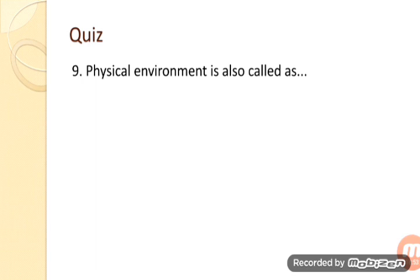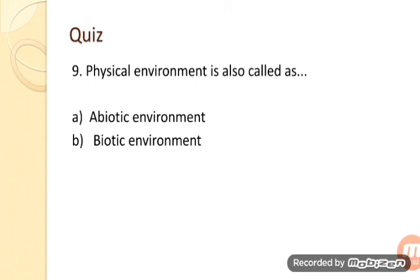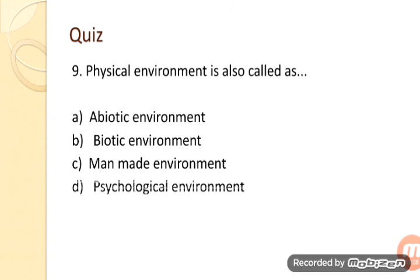Next question: Physical environment is also called as? Option A: Herbiotic environment. Option B: Biotic environment. Option C: Man-made environment. Option D: Psychological environment. The correct answer is A — Herbiotic environment.